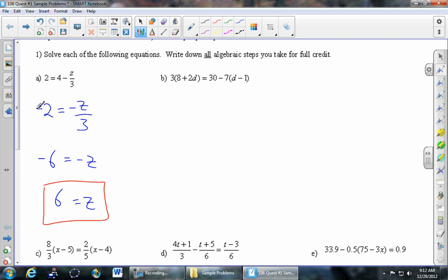Part B. 3 times 8 plus 2d equals 30 minus 7 times d minus 1. First I'll distribute to get rid of those parentheses. The 3 goes in. Copy the 30. And then the 7 goes in.